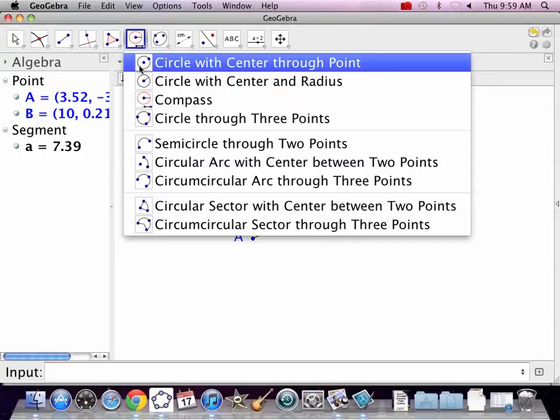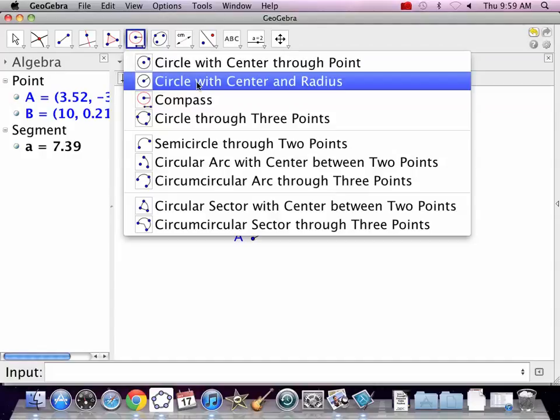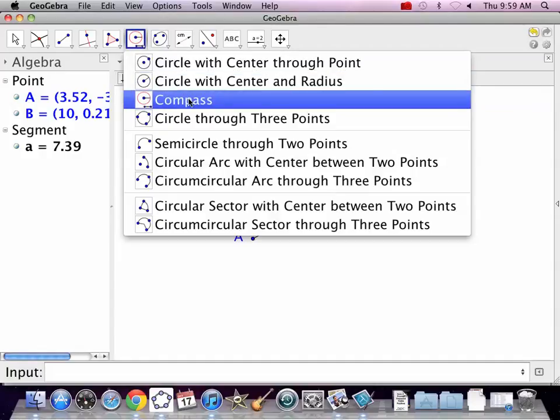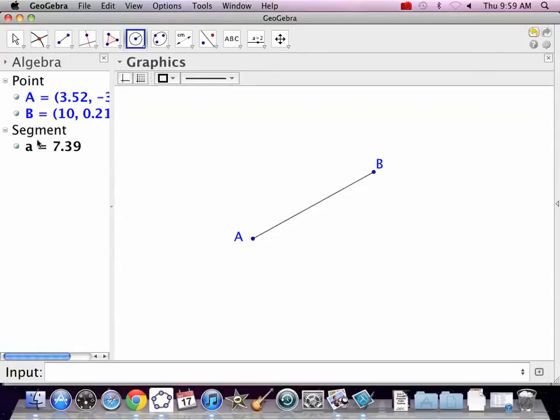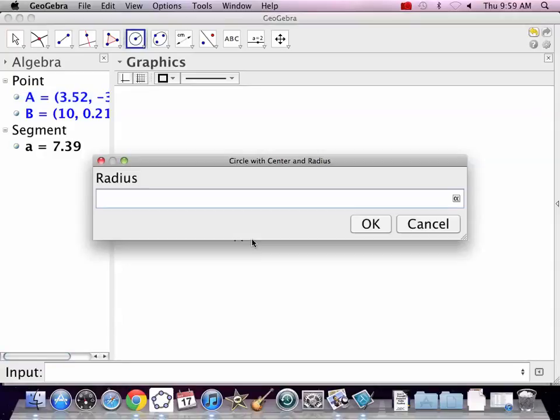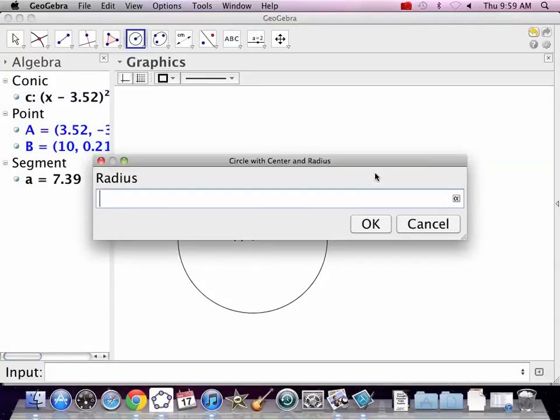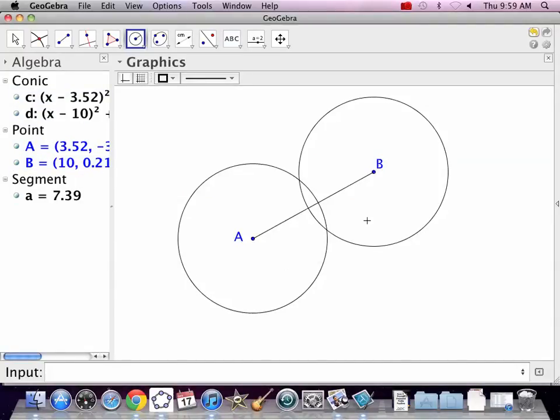So they've got to be bigger than halfway across if you are using a compass on paper. So let's get a circle center and radius. You could use a compass if you wanted to and just make it AB. I'm going to look over here. The segment is 7.39. So if I make my circle 4, it's going to go more than halfway.